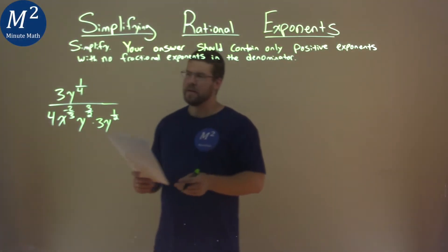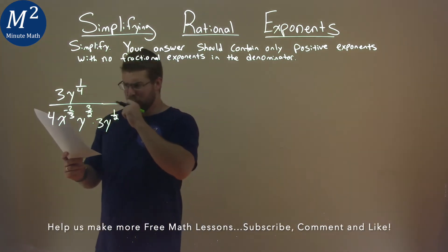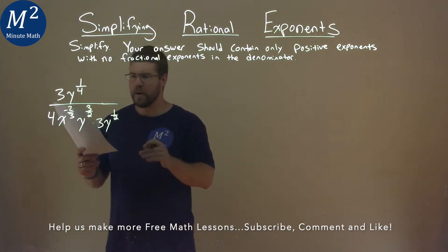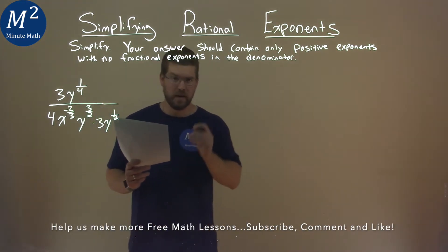We're given this problem right here: 3y to the 1/4 power over 3x to the negative 2/3 power, y to the 3/2 power, times 3y to the 1/2 power, and we've got to simplify.